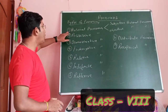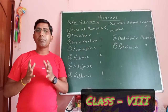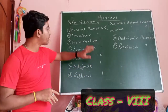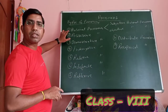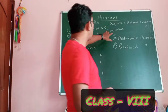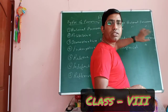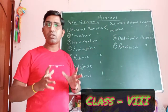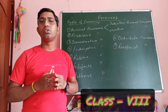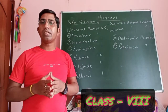The first type is personal pronouns. Personal pronouns are pronouns that function as the subject or the object of a sentence. Personal pronouns are divided into two types: subjective personal pronouns and objective personal pronouns. Subjective personal pronouns are pronouns which are in the nominative case and function as the subject of the sentence.